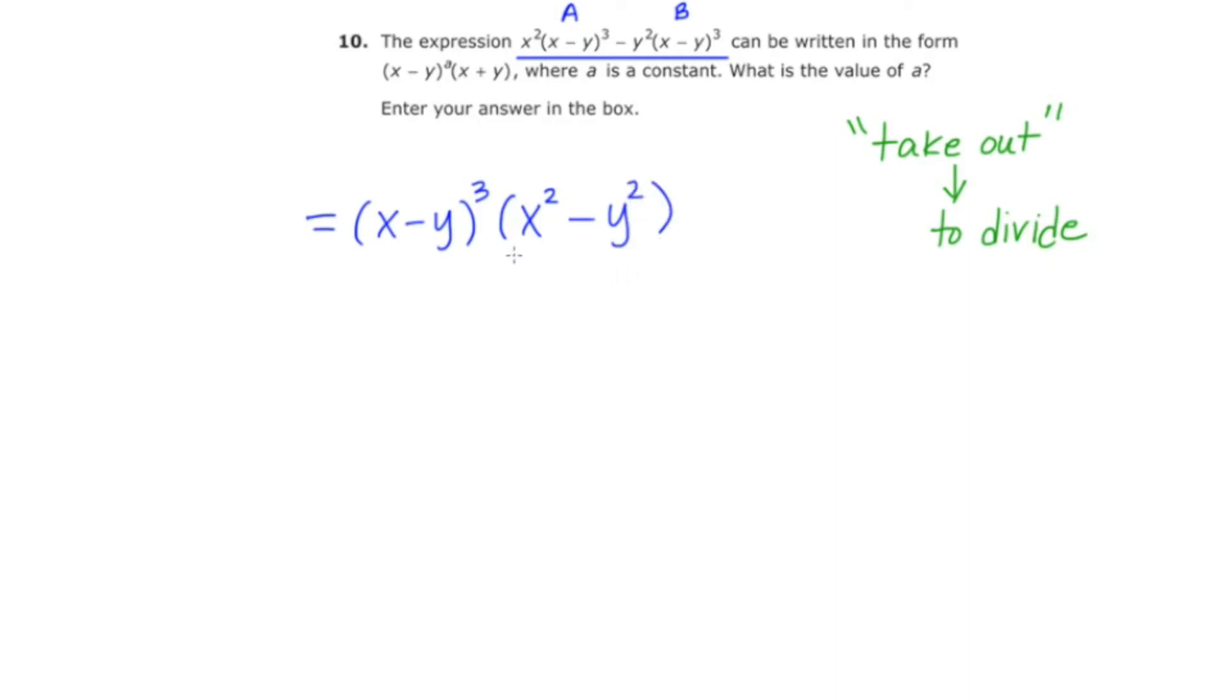Now this result here that I just came upon can be factored further as a difference of two squares, X minus Y, X plus Y. So I'm going to go ahead and do some rewrites here. This first term, I'm not going to do anything to, I'm just going to rewrite it. So that's going to become X minus Y cubed. And then this is going to factor as a difference of two squares, which I said earlier, and it's going to turn into X minus Y, X plus Y.